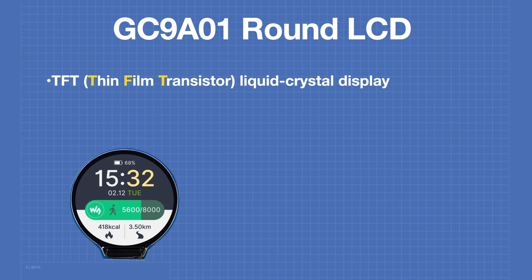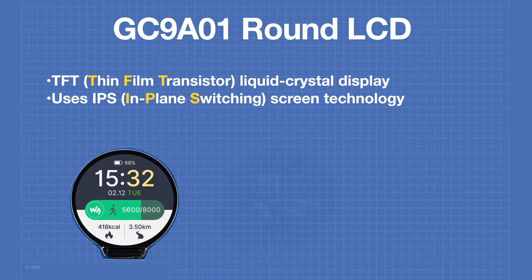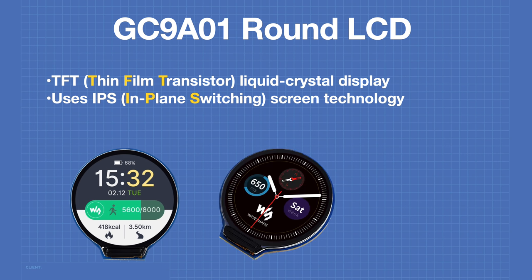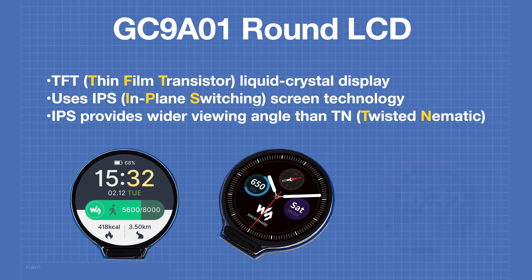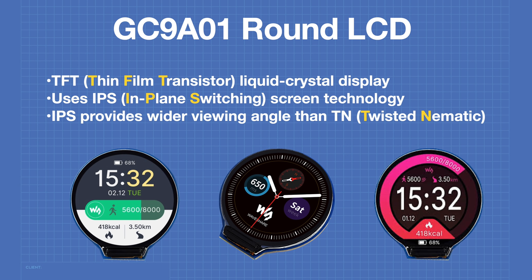The GC9A01 uses TFT, or thin film transistor, liquid crystal display technology. It also uses IPS, or in-plane switching, screen technology. IPS provides a wider viewing angle than TN, which is a twisted nematic type of display common in the 1980s and 90s. These displays make excellent indicator panels and can be a lot of fun to use. So let's go and take a look at the GC9A01 module.